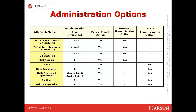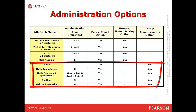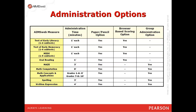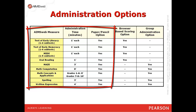AIMSweb measures only take a few minutes to give. Many may be administered by group, meaning you can assess your entire class in perhaps 3 to 10 minutes. Many measures also offer browser-based scoring, which allows the teacher to score right online without using excess paper. However, we still offer paper-pencil options for any of the measures you choose to use.